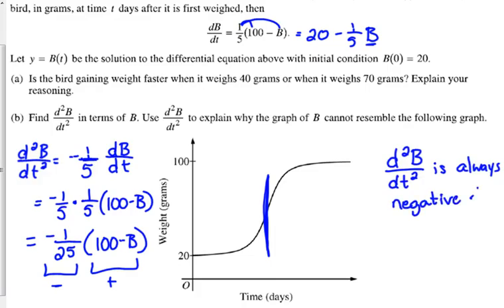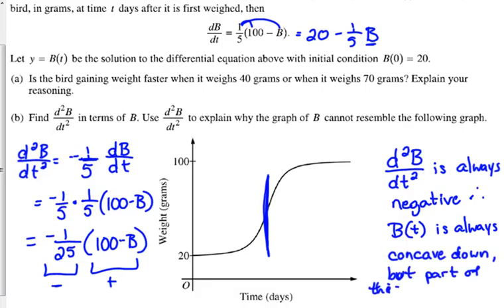So your explanation should be that the second derivative is always negative. Therefore, B of T is always concave down, but part of that graph is concave up.